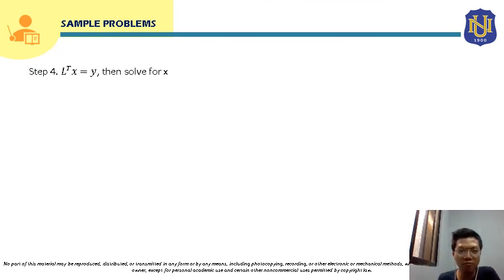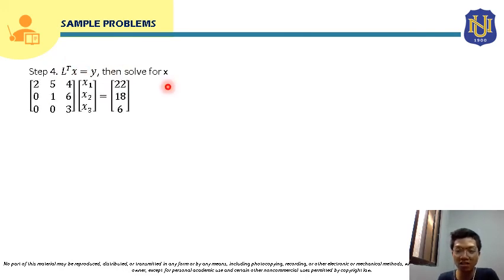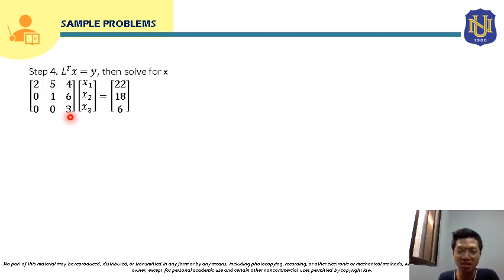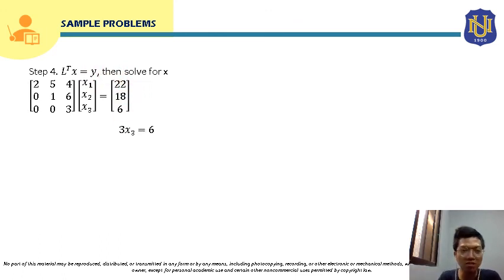For step 4, we use LᵀX = Y. The transpose Lᵀ has elements: row 1: 2, 5, 4; row 2: 0, 1, 6; row 3: 0, 0, 3. Multiplying by [X1, X2, X3]ᵀ and equating to [22, 18, 6]ᵀ: starting from the bottom row, 3·X3 = 6, so X3 = 2.